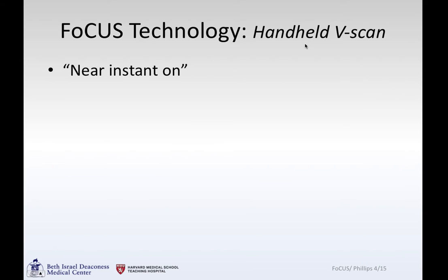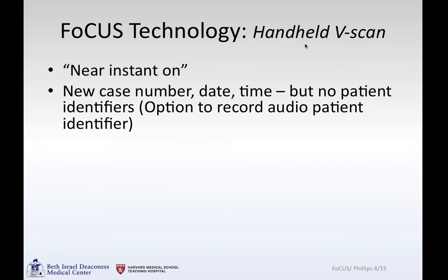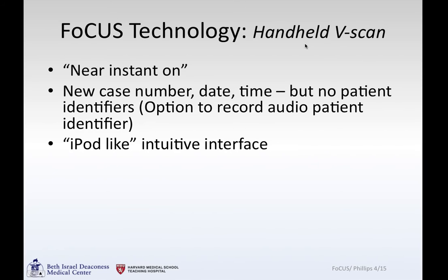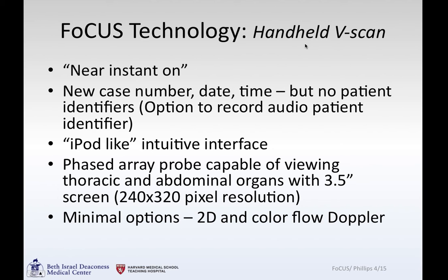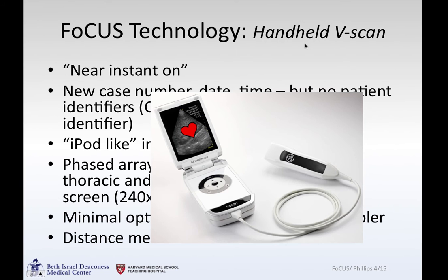A brief word about the technology. We use the V-scan: flip it open and it turns on almost instantaneously. It identifies a new case number, date, and time, but no patient identifier. You have the option of recording audio over each study to remind yourself what you're looking at. There's an iPod-like intuitive interface, a phased array probe, and a 3.5-inch screen with 240 by 320 pixel resolution. You have options of 2D and color flow Doppler, and you can make post-hoc distance measurements. Here's the unit with the heart on the screen.